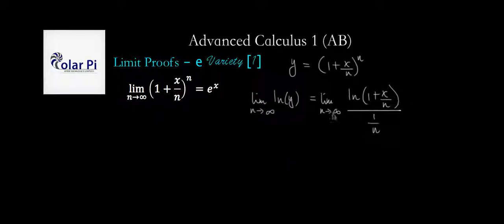Okay, and what's this limit here? Well, as n goes to infinity, x over n is going to go to 0, right? And because of that, the numerator here is going to go to the natural log of 1, but we recall that the natural log of 1 is 0.